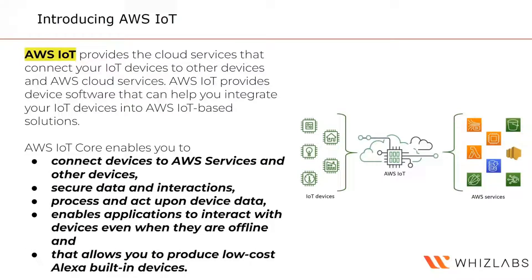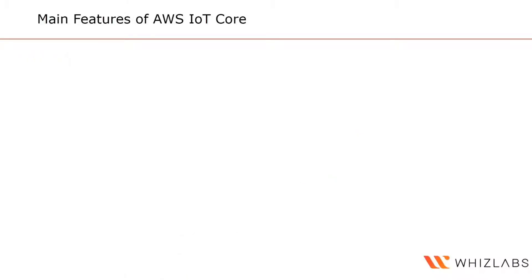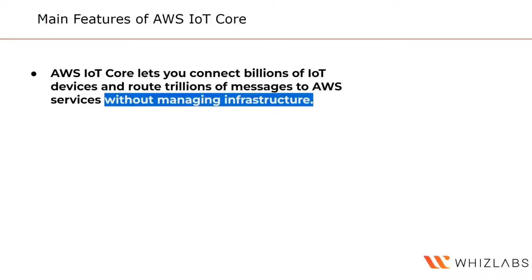AWS IoT Core also enables you to produce low-cost Alexa built-in devices. For example, a smart bulb with a built-in speaker installed in your bathroom that plays an uplifting tone while you're getting ready for the office. AWS IoT Core allows you to build this. Its main features include connecting billions of IoT devices and routing trillions of messages without managing any infrastructure — no servers, message queues, or rules to manage.